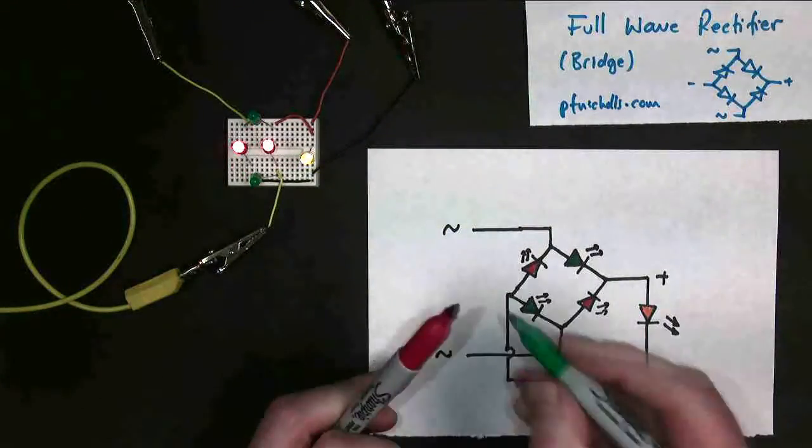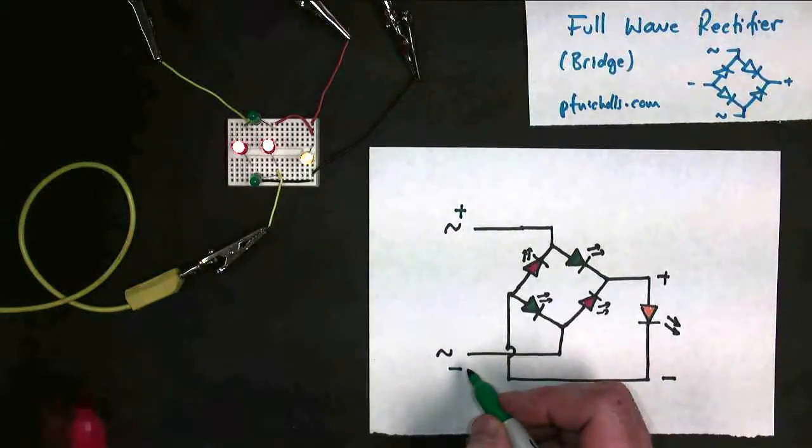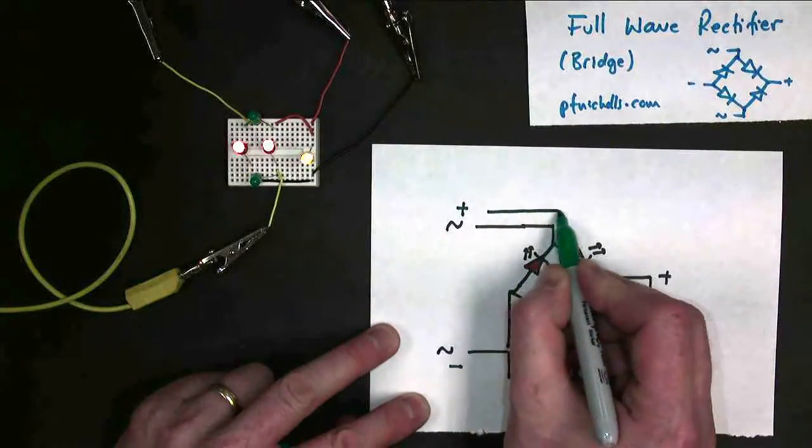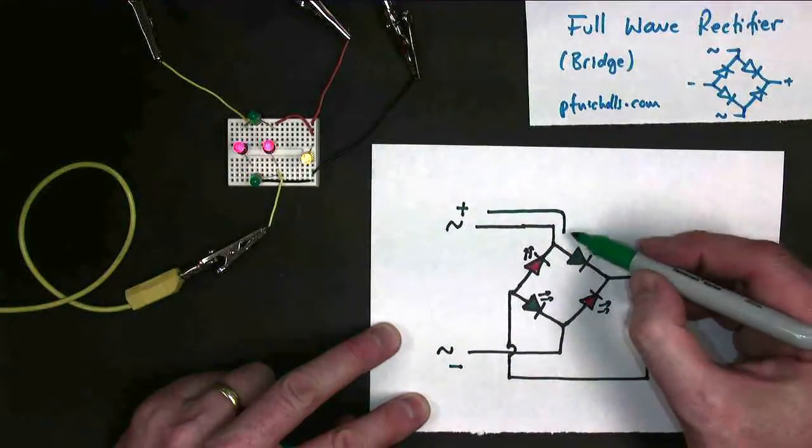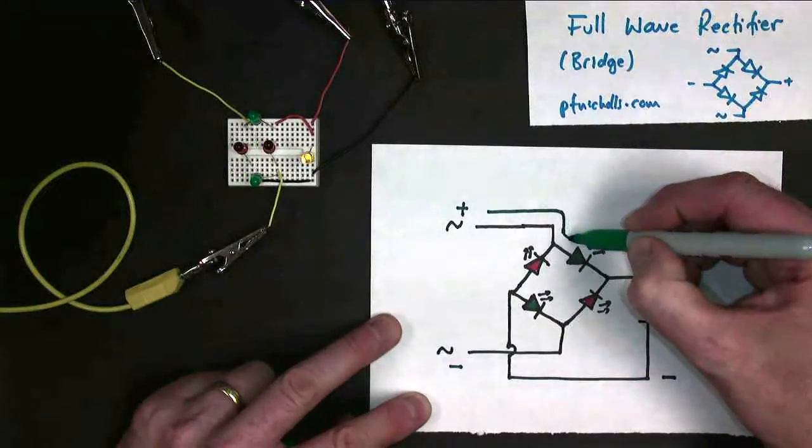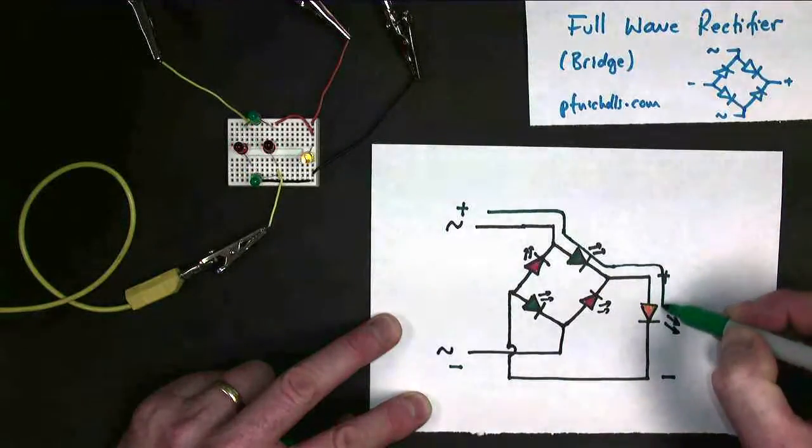Let's consider when the power supply is positive up here and negative down here. So what's going to happen? Well, current's going to flow along here. It's going to get to this junction and decide which diode can it go down. It can't go backwards through that one. It has to go through that one. It can't go backwards through this one, so it has to carry on down here.